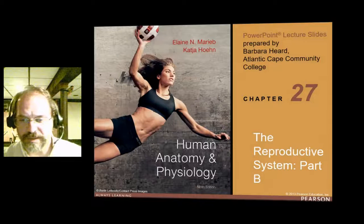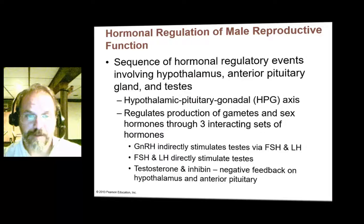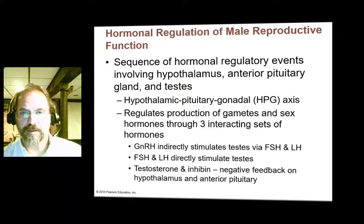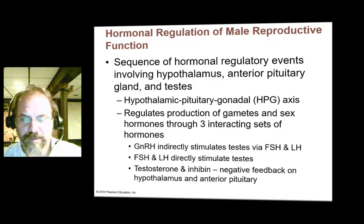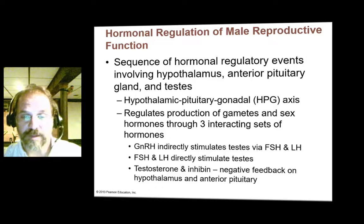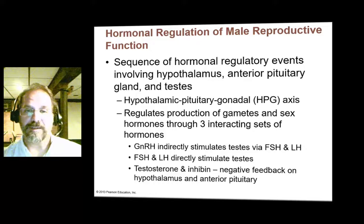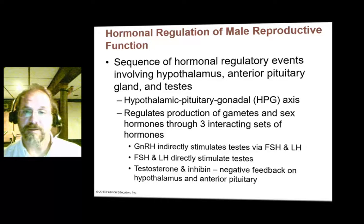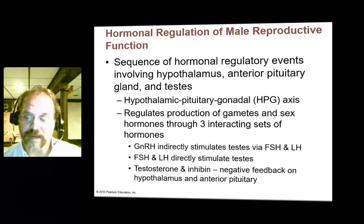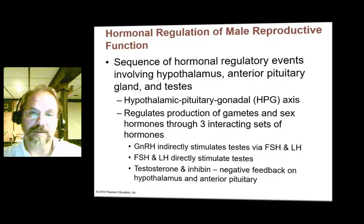Alright, continuing on with our talk about the reproductive system. So far we've talked about the male reproductive system, we've talked about the structures of the male reproductive system, we've talked about gametogenesis, we've talked about meiosis and the special cell division that gives rise to gametes. I hope it's clear that meiosis occurs in both males and females. We've only talked about its role in spermatogenesis, but now we'll get into its role in oogenesis, the production of female gametes.